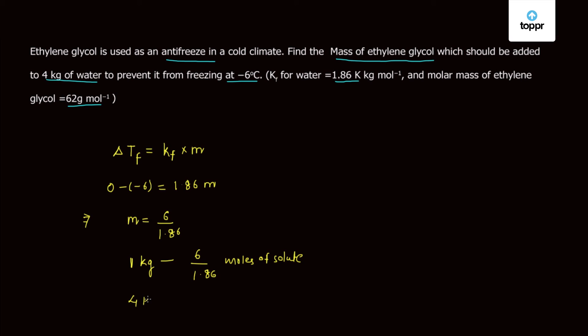So 4 kg of solvent will have 6 upon 1.86 times 4 moles of solute, which is nothing but times 62 grams of solute.